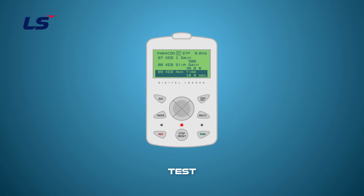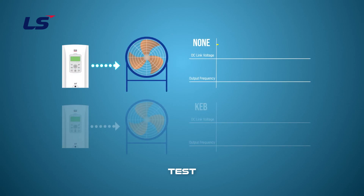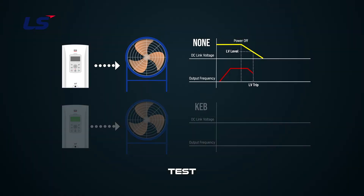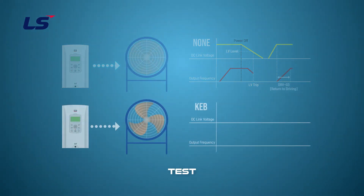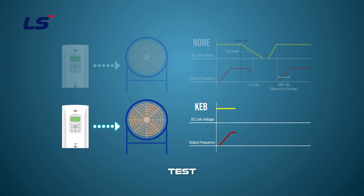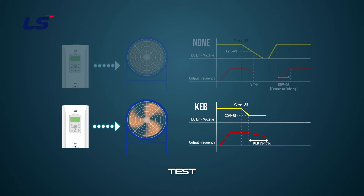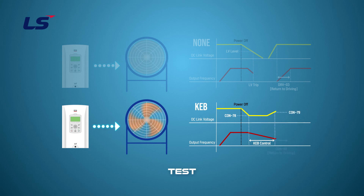After all the settings are done, let's run the fan and check the operation. If a power failure occurs while CON 77 is set to none, the inverter stops output and the fan stops operation. However, if CON 77 is set to KEB1, even if a power failure occurs, the DC link terminal is charged with regenerative energy by KEB control, so the output is not immediately cut off and the fan operation is maintained.